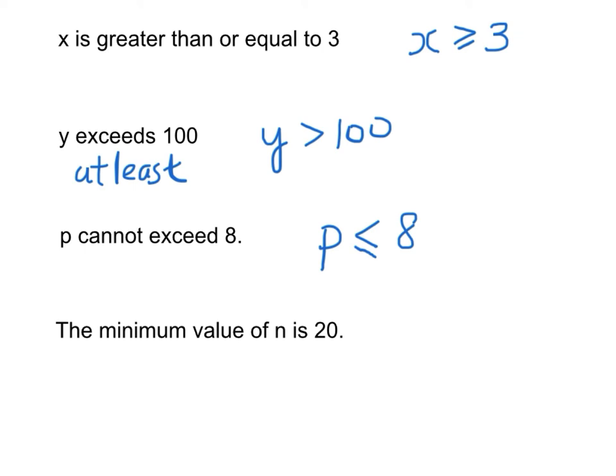p can be 8 because if p is 8, p cannot exceed 8 - this is true. p will not exceed 8 because they are just equal. So p ≤ 8 is the correct answer.